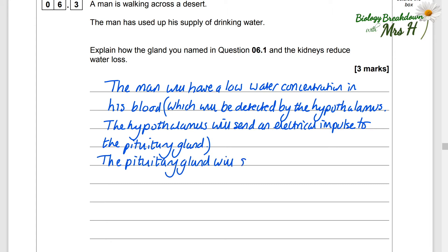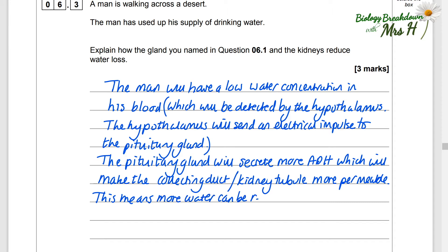The pituitary gland will secrete more ADH which will make the collecting duct, and if you're not happy with the word collecting duct you can just put kidney tubule, more permeable and that means more water can be reabsorbed. And by reabsorbed we mean it goes back into the blood by osmosis.